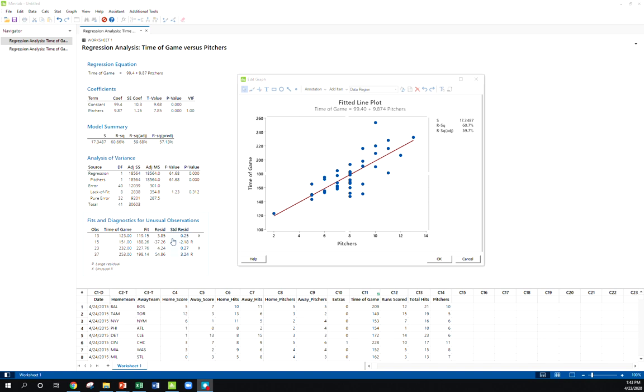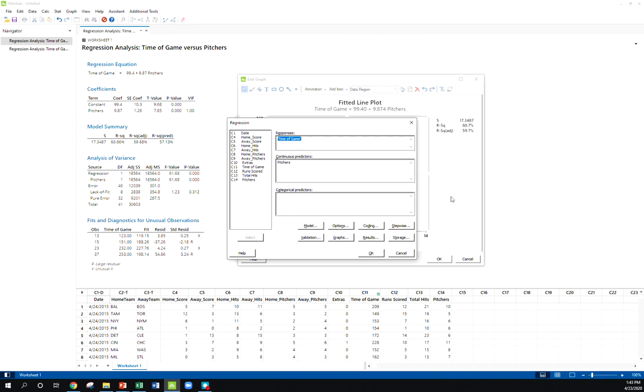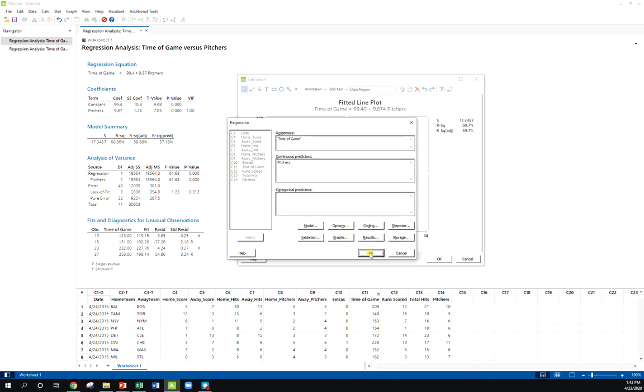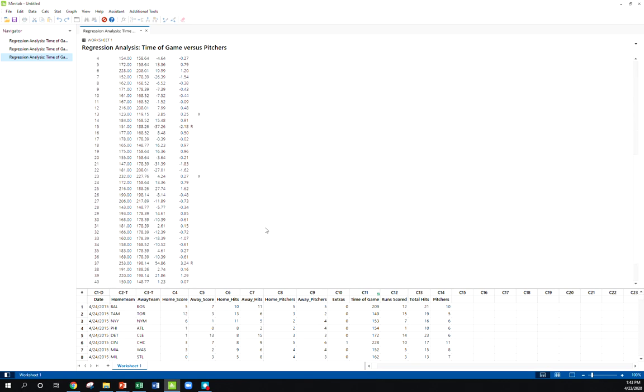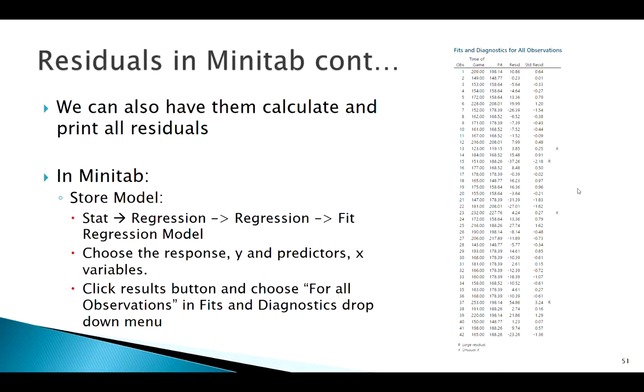Now what if I want to see not just the concerning residuals? What if I want to see all of my residuals? That's possible to do in Minitab. So once you've gone to stat, regression, you've stored your line plot here, right? When I go to fit regression model, when we go here to our results button, fits and diagnostics, it says only for unusual by default. If we want to say for all observations, there we go, and it will calculate all of our residuals here for every observation. So if that's something you want to do, it is doable here in Minitab.